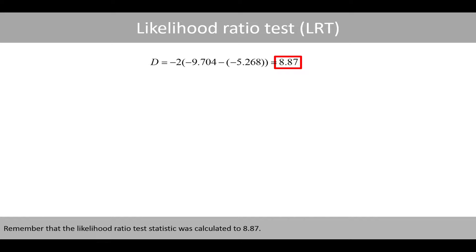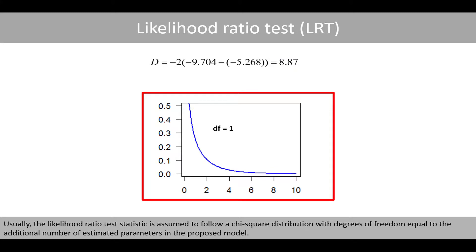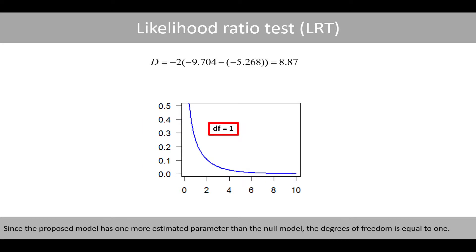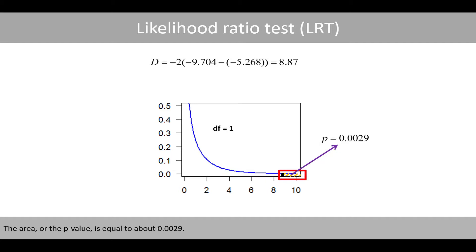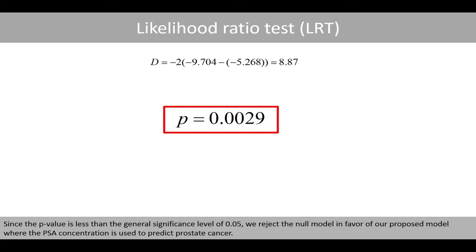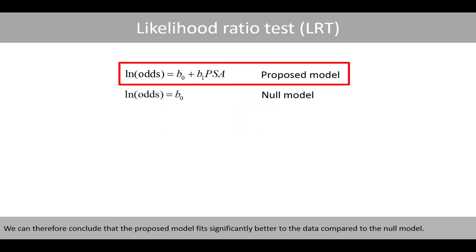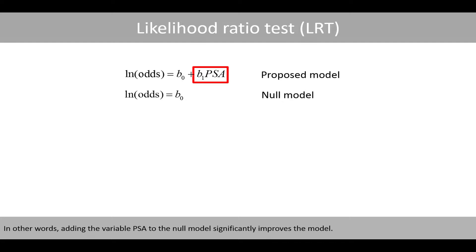The likelihood ratio test statistic was calculated to 8.87. Usually, the likelihood ratio test statistic is assumed to follow a chi-square distribution with degrees of freedom equal to the additional number of estimated parameters in the proposed model. Since the proposed model has one more estimated parameter than the null model, the degrees of freedom is equal to 1. The area covering the right-hand side of the test statistic 8.87 in this distribution represents our p-value, which equals about 0.0029. Since the p-value is less than the significance level of 0.05, we reject the null model in favor of our proposed model, where PSA concentration is used to predict prostate cancer, and conclude the proposed model fits significantly better to the data. In other words, adding the variable PSA to the null model significantly improves the model.